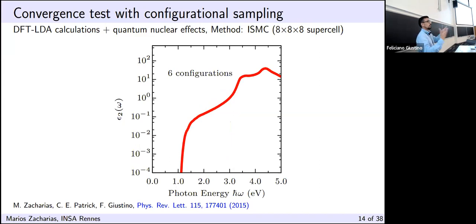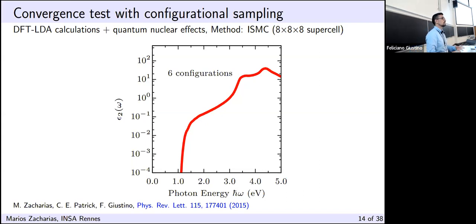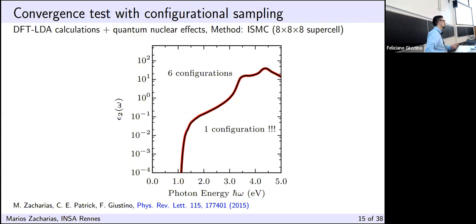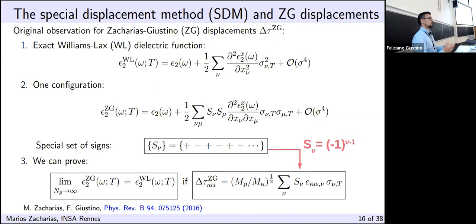Because we're using importance sampling Monte Carlo, we generate a variety of configurations. Using six configurations and taking the average with a large eight-by-eight-by-eight supercell, we found that as we increase the supercell size, even a single configuration can do the job. So we asked: under what conditions will a single configuration give the exact Williams-Lax dielectric function? We took the Taylor expansion of the Williams-Lax theory: you take the dielectric function depending on nuclear coordinates and perform the multi-dimensional integration, giving the exact Williams-Lax dielectric function as a Taylor expansion.